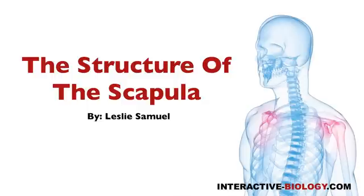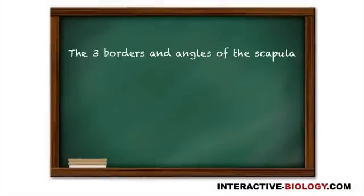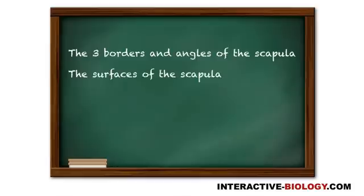Welcome to another episode of Interactive Biology TV, where we're making biology fun. My name is Leslie Samuel, and in this video I'm going to be talking about the structure of the scapula. More specifically, first I'm going to talk about the three borders and the three angles of the scapula, then the surfaces of the scapula, and lastly the processes of the scapula.